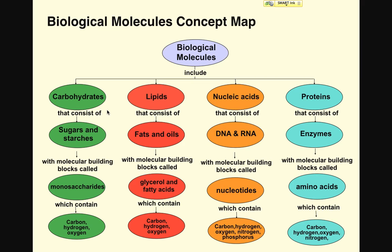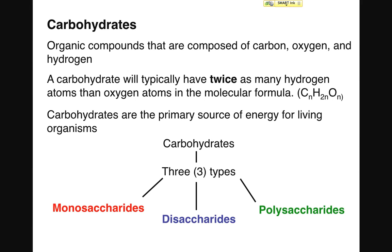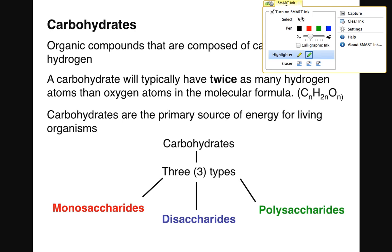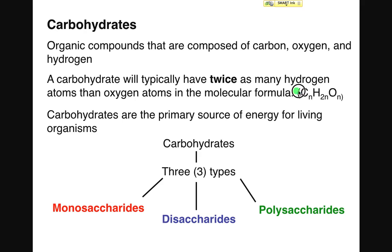All monosaccharides are going to serve as the molecular building block of any carbohydrate in question. The three most common elements found in carbohydrates are carbon, hydrogen, and oxygen. One easy way to identify a carbohydrate is to look at the molecular formula: if there are twice as many hydrogen atoms as either carbon or oxygen atoms, there's a pretty good chance you're looking at a carbohydrate. These are the primary energy source for living organisms.